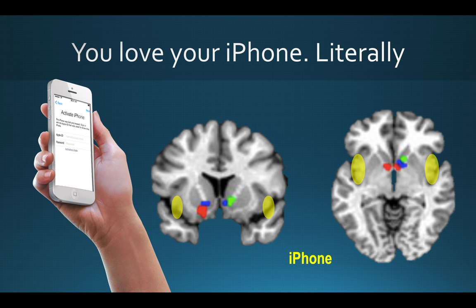They found this to their surprise and said, this is really interesting because it means that these people aren't addicted to their iPhone — they love their iPhone, literally. They looked at the activation in the insula and said this is a biomarker for love. What they've done is something we in the field call reverse inference: they've taken an activation pattern and tried to infer what was happening in the person's mind from that — trying to figure out their cognitive state. The problem is that there really isn't a lookup table in the brain.